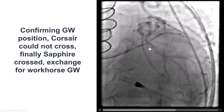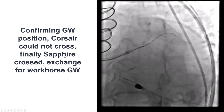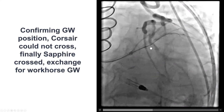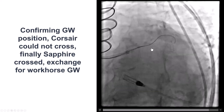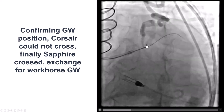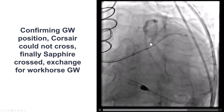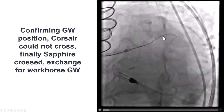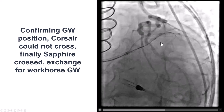The lesion was balloon uncrossable. The microcatheter was removed and a Sapphire Pro 1.0 mm balloon was used — the first-line approach for balloon uncrossable lesions. This successfully created a track through which the Gaia Nex 2 was exchanged for a workhorse guidewire.